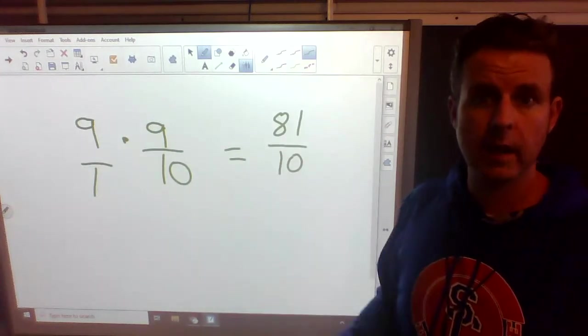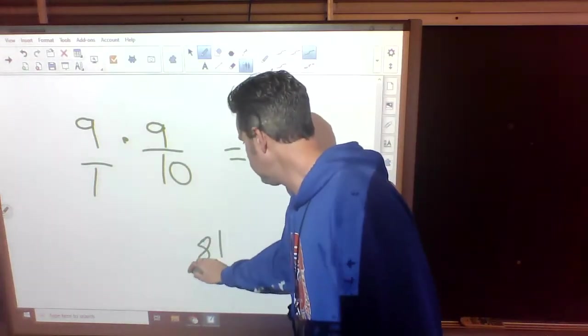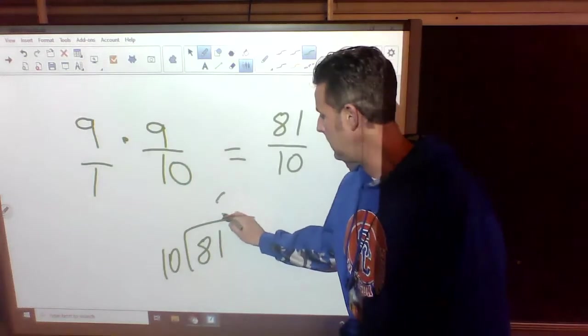What's wrong? It's improper. It's top heavy. The top number is bigger than the bottom. So we do 81 divided by 10. How many times will 10 fit into 81?